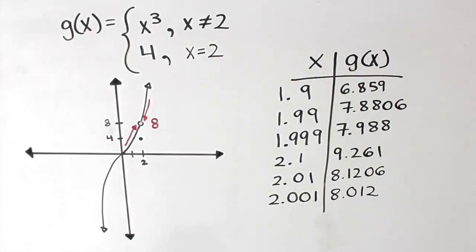So even though g of 2 equals 4, we have now shown both graphically and numerically that the limit of g of x as x approaches 2 is actually 8, even though the graphical point is a hole.